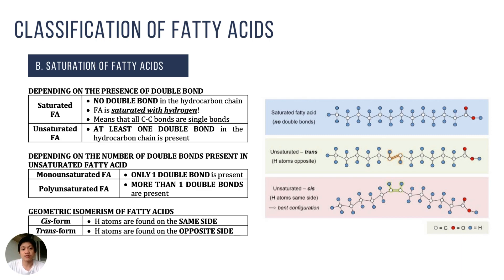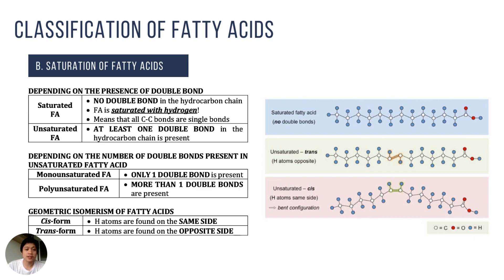We can also classify fatty acids based on their geometric isomerism. In cis-form, the hydrogen atoms are on the same side, while in trans-form, the hydrogen atoms are on the opposite side. For example, a cis-unsaturated fatty acid has hydrogen atoms located on the same side of the double bond, while in trans-form the hydrogen atoms occur on opposite sides. This is the basis for the term trans-fat, which is in general not good for human health.